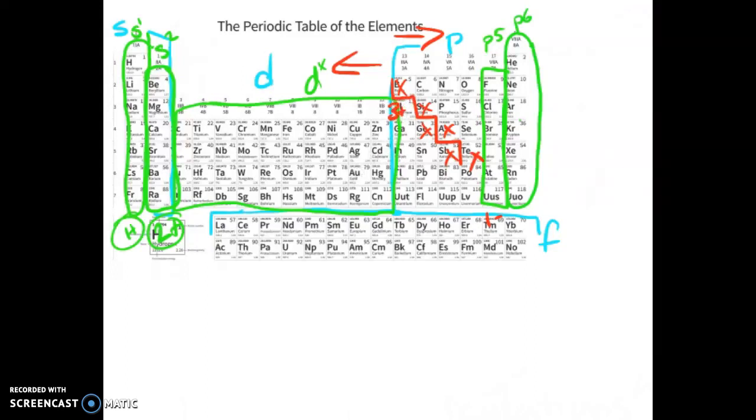But some other things we need to talk about while we are on the periodic table are electron affinity, ionization energy, and atomic radii. Now first we will talk about electron affinity, which is an atom's ability to lose an electron. Electron affinity follows a very specific periodic trend. Across the table it goes down as you go to the left but increases as you go up the table.